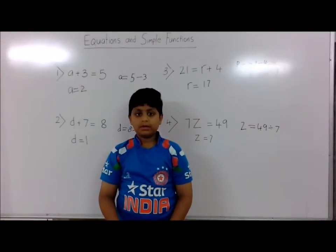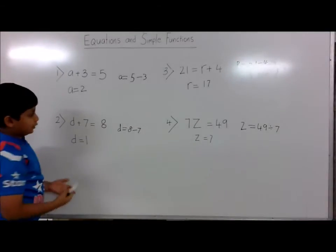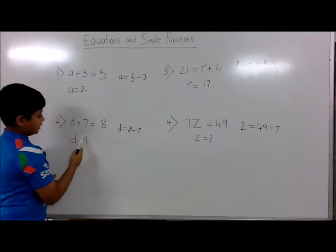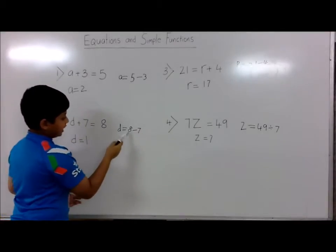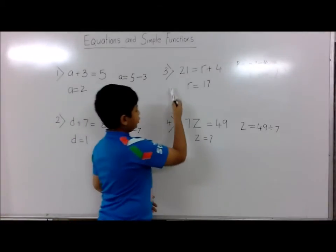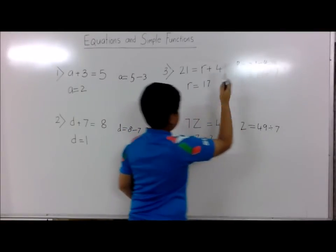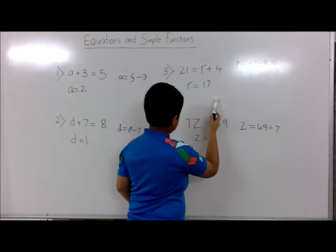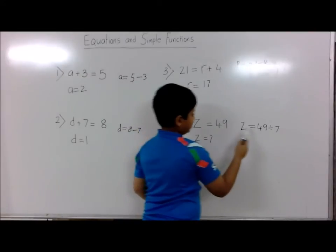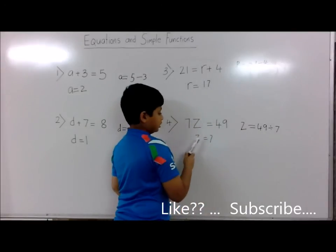We are going to summarize our equations and simple functions. First question: a plus 3 is equal to 5, so a is equal to 2. Second question: d plus 7 is equal to 8, so d is equal to 1. Third question: 21 is equal to r plus 4, so r is equal to 17. Fourth question: 7z is equal to 49, so z is equal to 7.